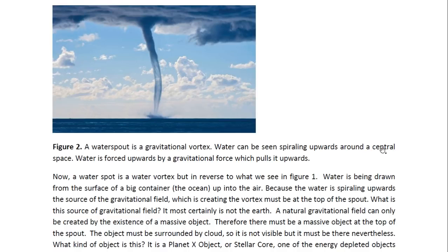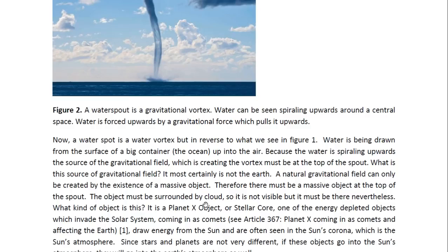Water can be seen spiraling upwards around a central space. You can actually see the water here forming the spiral as it moves upwards into that cloud. Water is forced upwards by a gravitational force which pulls it upwards. In other words, the gravitational force which is pulling this water upwards has its source up here somewhere. It is not caused by the Earth — it is caused by something else.